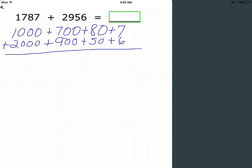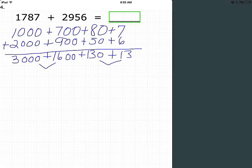Then we add by place. So the ones give us 13, the tens 130, the hundreds 1600, and the thousands 3000. And then we add for partial sums, so 3000 plus 1600 is 4600, and 130 plus 13 is 143.